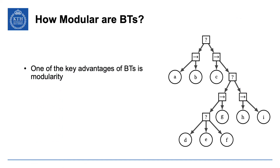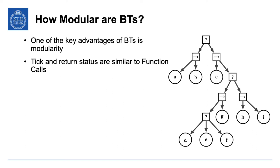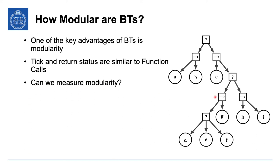So how modular are behavior trees? Well, one of the key advantages of behavior trees is their modularity. That modularity comes from the fact that ticks and return statuses are similar to a function call. When this node ticks a subtree, something happens and up comes either a success, a failure, or a running. Based on this information, the node decides what to do next — it doesn't need to know what computations were done internally. That's similar to a function call where you don't need to know the implementation, just how to use it.